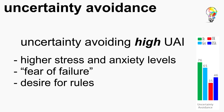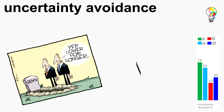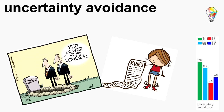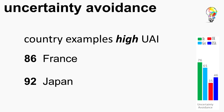In uncertainty-avoiding societies, people generally have higher stress and anxiety levels, less achievement motivation and therefore a fear of failure. Rules shouldn't be broken and people feel a need for rules. Examples here are lower investments in general, even in secure ventures, and a low number of corporation establishments, because these societies tend to have more rules making it harder and slower to establish a company. Country examples are Japan with a score of 92 and France with 86.